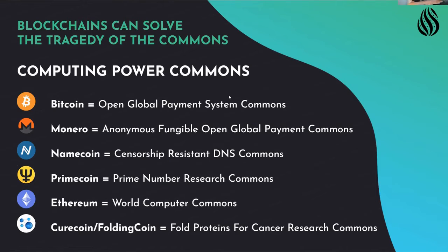One example you might not know, but it's a perfect one: PrimeCoin has existed for years and years, and the only thing this blockchain does is churn out prime numbers. And it is an economy — it exists, there are miners, there's the entire ecosystem, and it is regenerative. It's self-sustaining because people are rewarded for doing this.